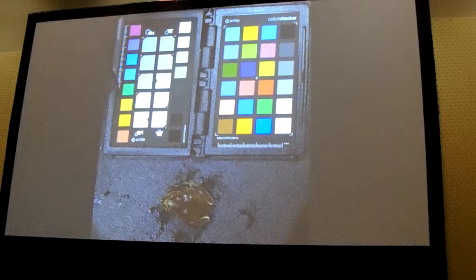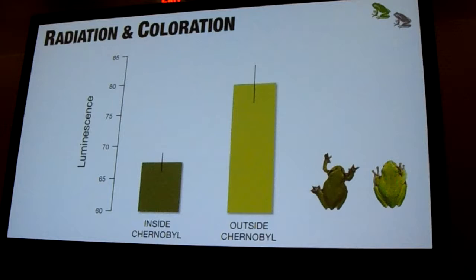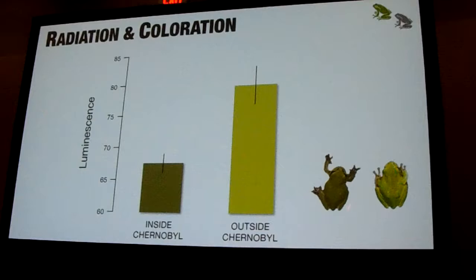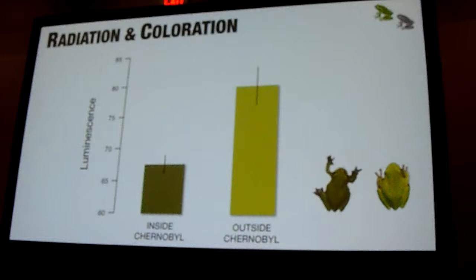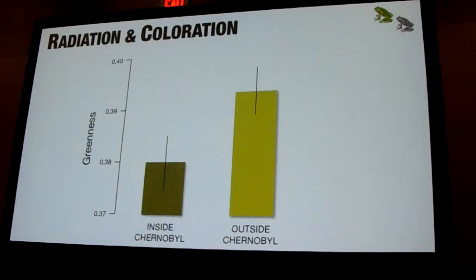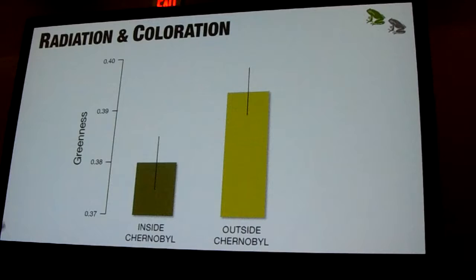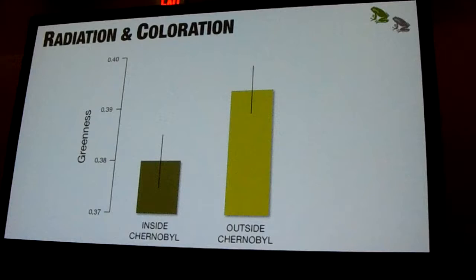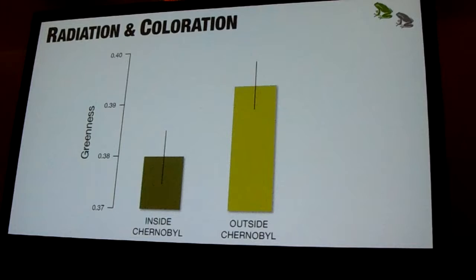Looking at this, the first really cool result we have is that there is a clear difference in coloration between frogs living inside and outside the exclusion zone. Frogs living inside the exclusion zone are much, much darker. This is the average coloration for a frog living in the exclusion zone versus one from outside — the luminosity is much, much darker, caused mainly by the green coloration spectrum. This is really cool because we know that darker coloration and increasing melanin has been linked many times with protection to UV radiation, and more recently has also been linked to resistance to ionizing radiation. For us, this could be a really good example of really rapid evolution and selection towards dark coloration in frogs living inside the exclusion zone and exposed to high radiation levels.